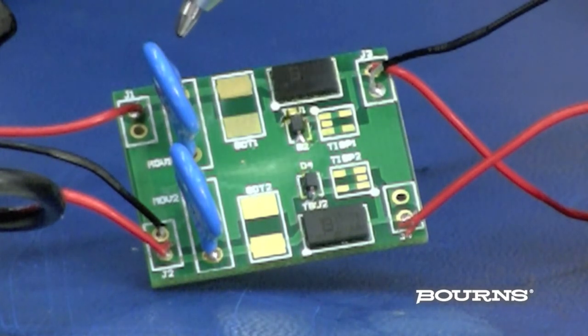The MOV's fast nanosecond response easily handles ESD, and with only 100 picofarad average capacitance, allows medium-speed signals to pass unattenuated, clamping high-surge current transients like lightning in this configuration.